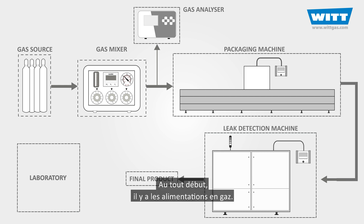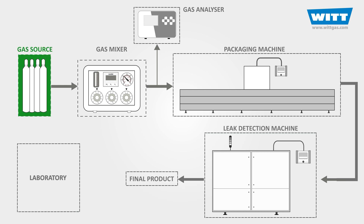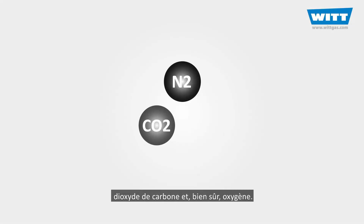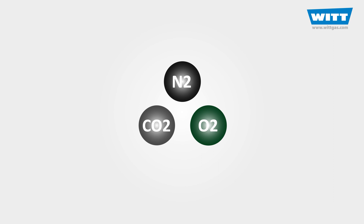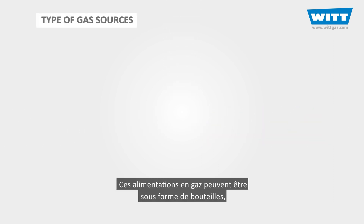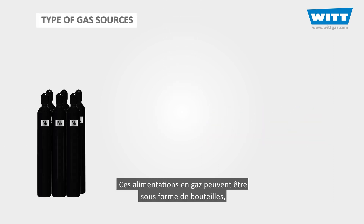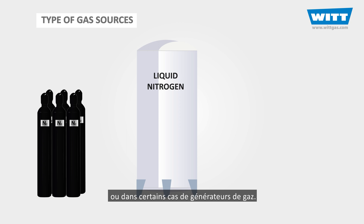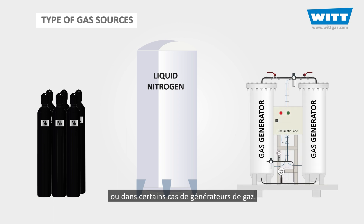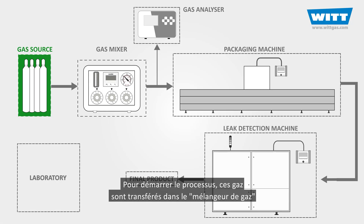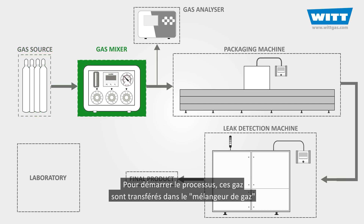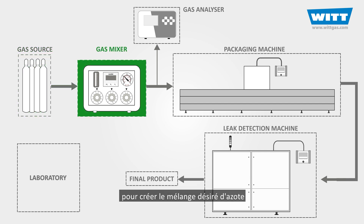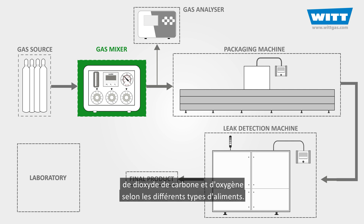At the very beginning, there are the gas sources. By gas, we mean nitrogen, carbon dioxide, and of course oxygen. These gas sources can be in the form of cylinders, cryogenic tanks, or in some cases gas generators. To start the process, these gases get transferred into the gas mixer to create the desired mixture of nitrogen, carbon dioxide, and oxygen for different types of foods.